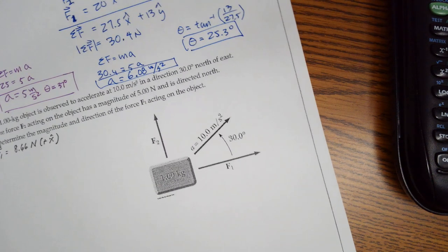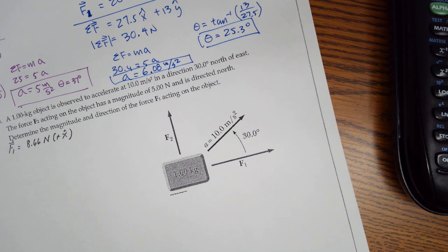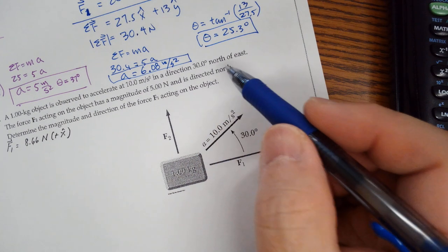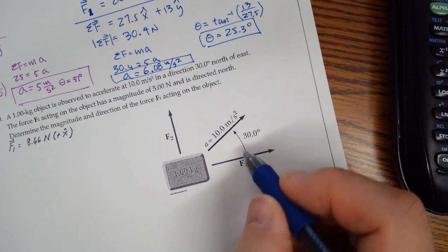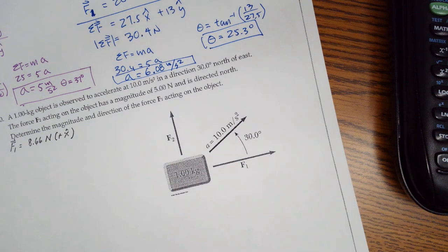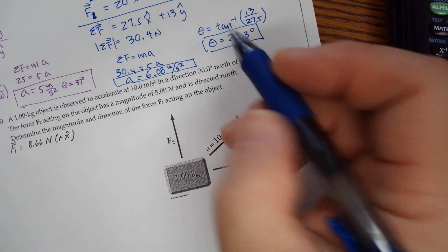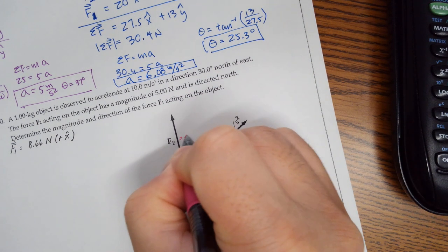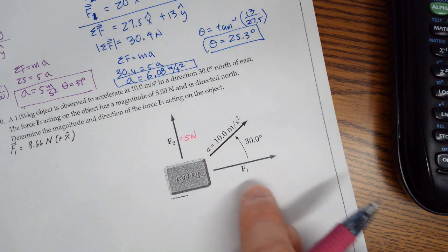Problem 10: a 1-kilogram object accelerates at 10 meters per second squared in the direction of 30 degrees north of east. Force F2 acts on the object with a magnitude of 5 newtons in the north direction. Determine the magnitude of F1.